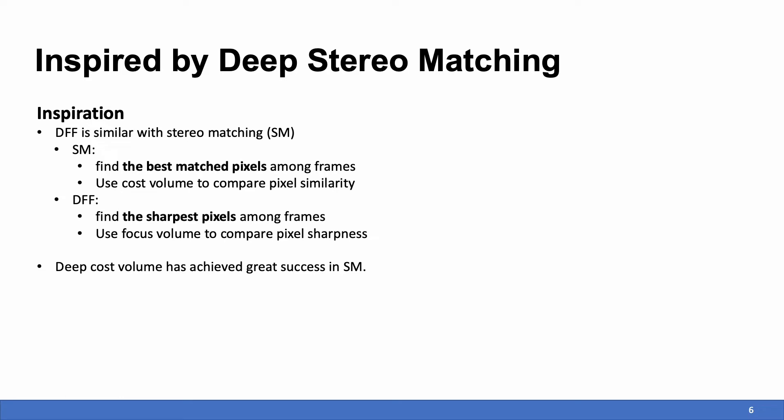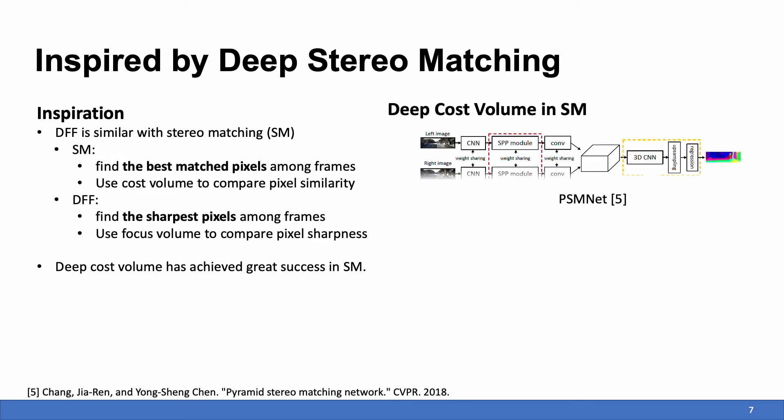Recently, the deep cost volume has achieved great success. One popular way to build the deep cost volume is to first extract deep features from the input frames using 2D CNN, and then horizontally compare the deep features pixel by pixel.